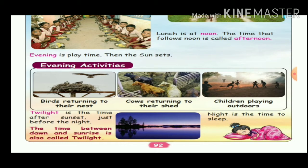Evening is the time of sunset. Twilight is the time after sunset, just before the night. The time between dawn and sunrise is also called twilight. Sunrise and sunset mark the twilight periods. Night is a time to sleep.